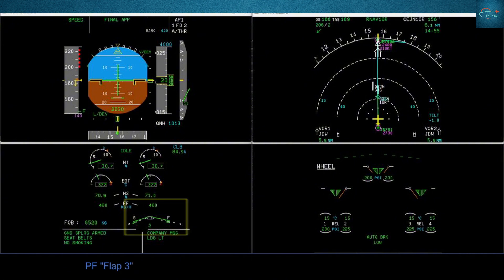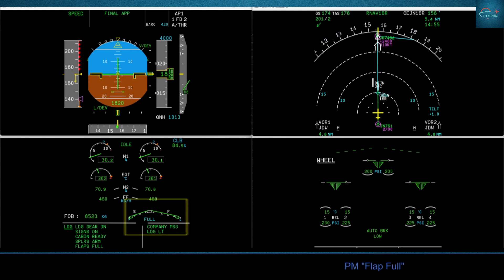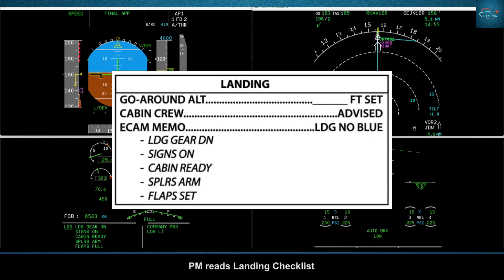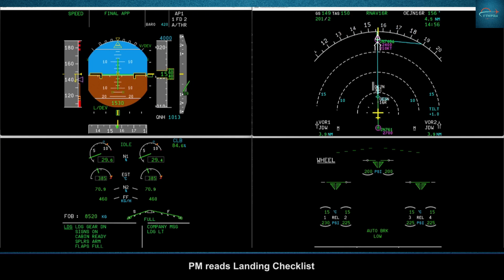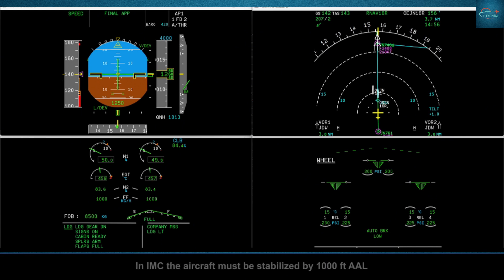Flap 3, speed checked. Flap 4, speed checked. Landing checklist — pilots monitoring reads landing checklist. In IMC, the aircraft must be stabilized by 1,000 feet above aerodrome level.